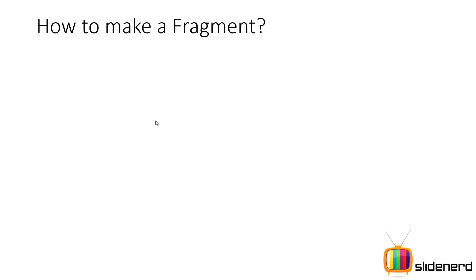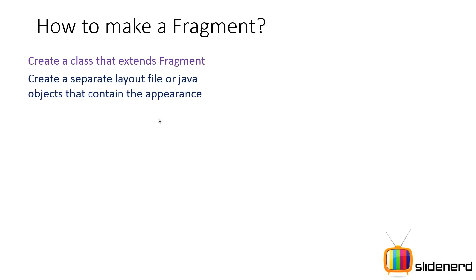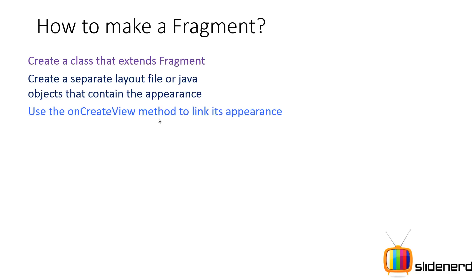So how do you make a fragment? Create a class that extends Fragment. Create a separate layout file that contains the appearance — a fragment is just like a mini activity, so it needs its own layout, if you plan to display a fragment with a layout. You can also have fragments which don't have a layout. Then use the onCreateView method to link the appearance to the object. I've discussed this method in my lifecycle video on fragments, please go back and check it if you haven't seen it.